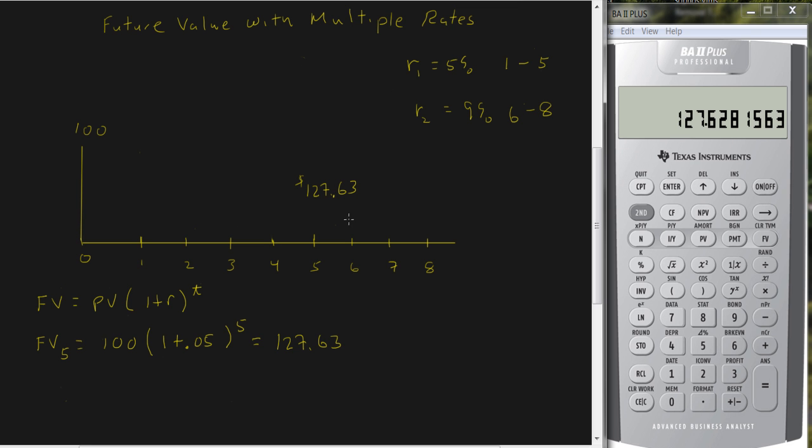Now we can treat this as a lump sum in year 5, and we want to go out 1, 2, 3 more periods, but now these three periods will be compounded out at an interest rate of 9%. So the future value in year 8 is going to be 127.63 times 1.09 raised to the 3rd power.